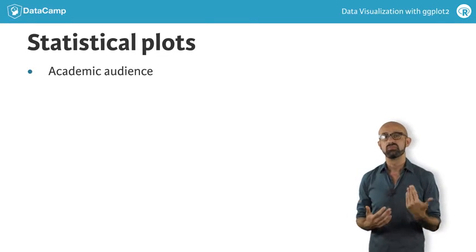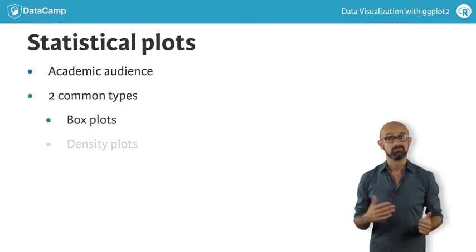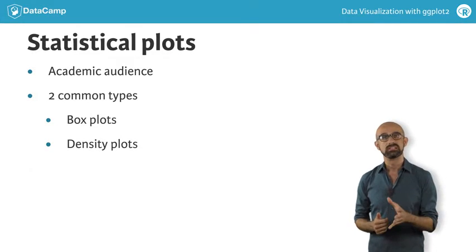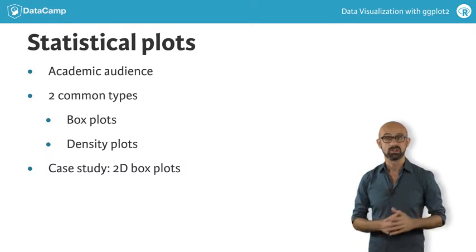We're going to look at two very common plot types for visualizing the distribution of continuous data: box plots and density plots. We'll return to box plots in the case study, where we develop a new statistics layer to produce a two-dimensional box plot.